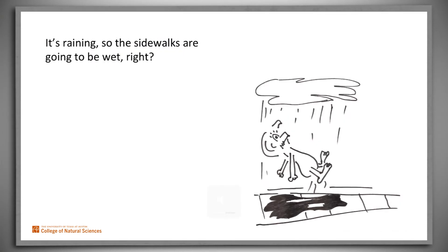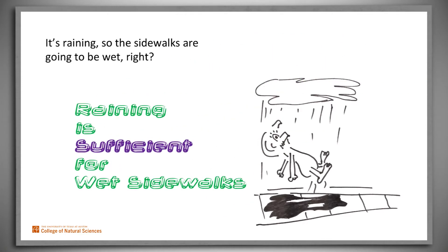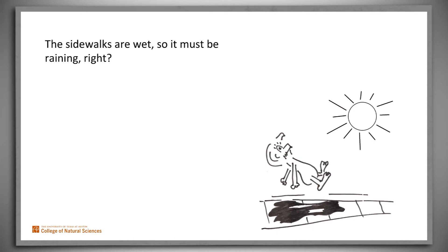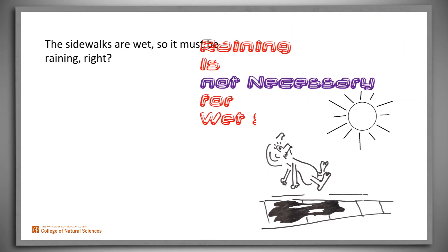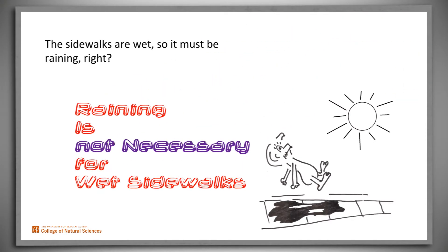It's raining, so the sidewalks are going to be wet, right? Yup. Raining is sufficient to guarantee wet sidewalks. The sidewalks are wet, so it must be raining, right? No. Raining is sufficient to guarantee wet sidewalks, but it's not necessary. Maybe instead the sprinklers just went off.